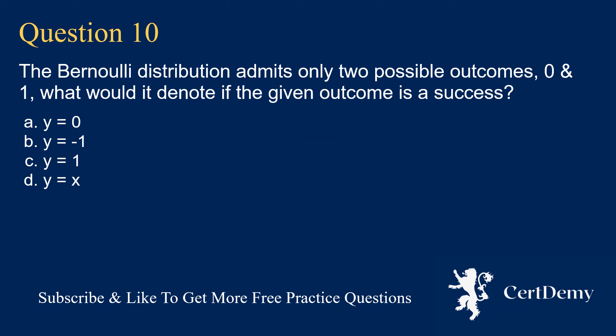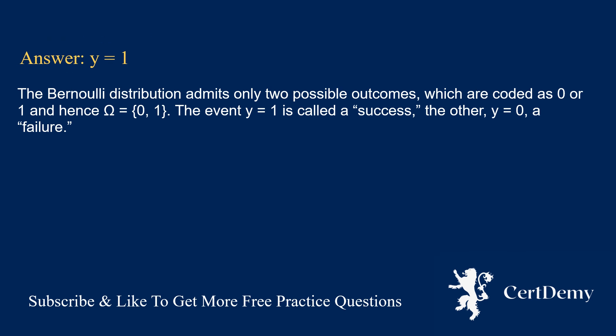Question 10. The Bernoulli distribution admits only two possible outcomes, zero and one. What would it denote if the given outcome is a success? Options: y equals 0; y equals minus 1; y equals 1; y equals x. The answer is: y equals 1. The Bernoulli distribution admits only two possible outcomes coded as 0 or 1, so omega equals {0,1}. The event y equals 1 is called a success; the other, y equals 0, a failure.